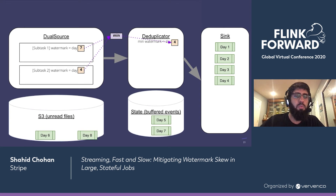We see that when there is skew between the source subtasks' watermarks, the size of the buffered state grows. This causes the app to move a lot slower, as it spends more time checkpointing and more time in I/O talking to RocksDB. You can imagine a pathological case where one subtask is racing to the finish while the other struggles to even get through its first file. These sources aggressively burn through their files as fast as they can, but as skew grows between the faster and slower sources, so does the state size, and this will eventually cause applications to slow to a crawl.